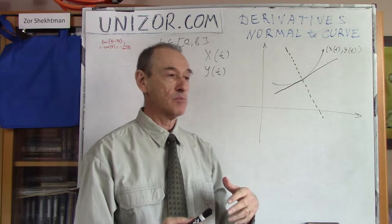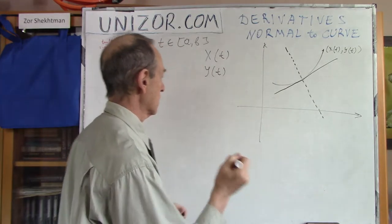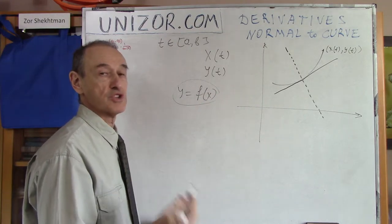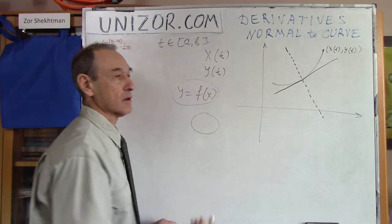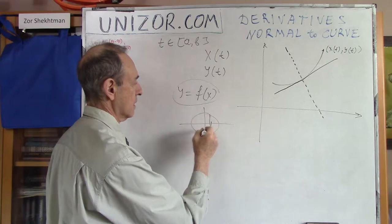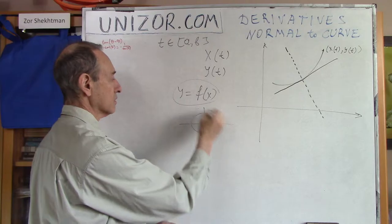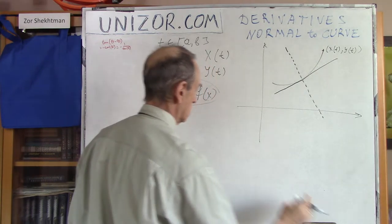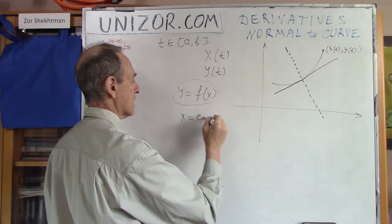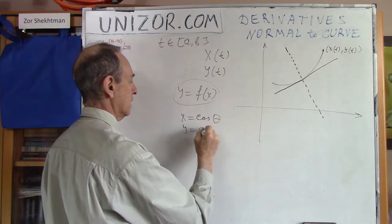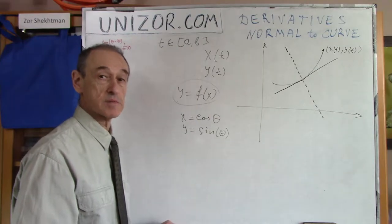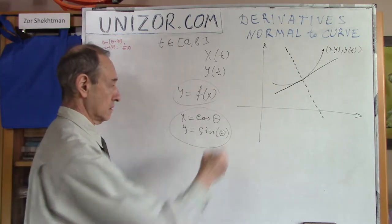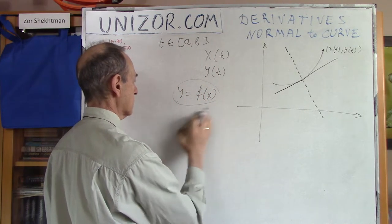That's how we describe the curve. This is a more universal way of representation than y equals some function of x, because that requires one particular value of y for every x. Curves like a circle do not fall into this category because for every x there are two different y values. So a circle is not a graph of y equals f(x). But using a parameter, x equals cosine of theta and y equals sine of theta gives exactly the unit circle. These two functions together describe every point of the circle. That's where parameterized representation is used.